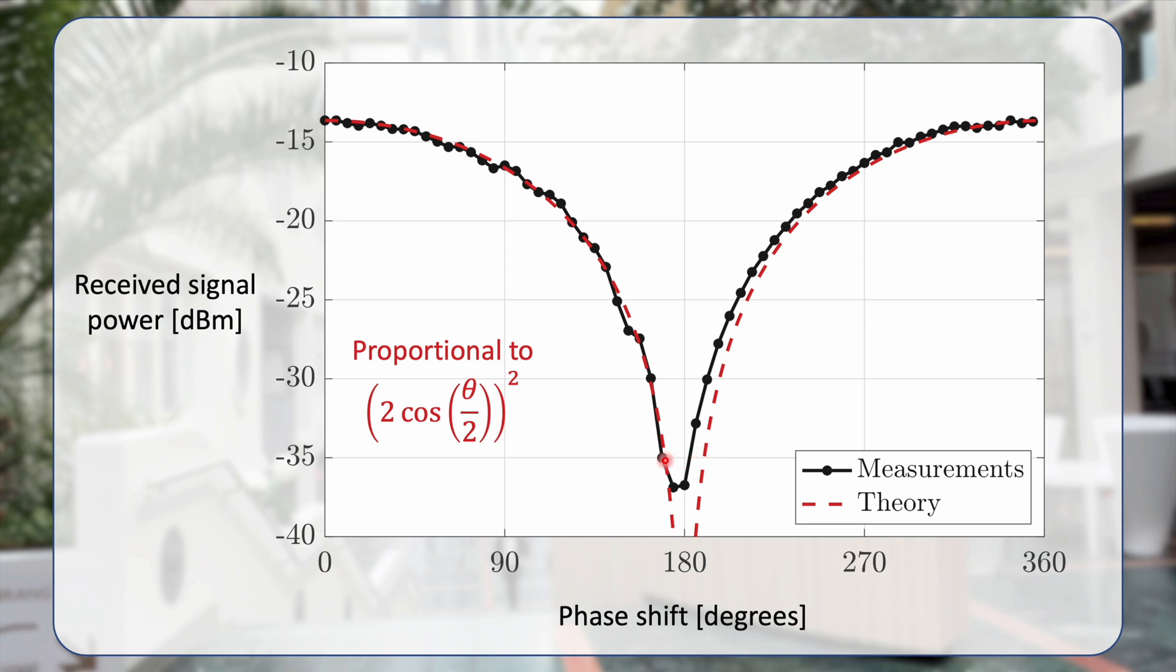When the phase shift between the two signals is close to 0, either at the left-hand side or at the right-hand side, well then we get the strongest received signal power. And that is when this factor here is close to 4, because the cosine gives us a 1, we get 2 to the power of 2.